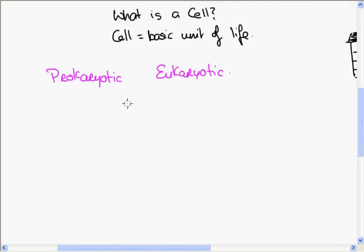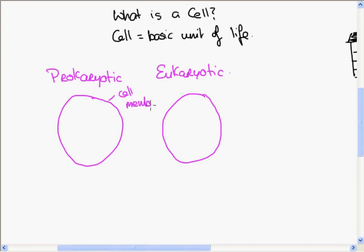Now, as we mentioned, a cell is an enclosed unit, and both prokaryotic and eukaryotic cells are enclosed by a cell membrane. So the prokaryotic cell has a cell membrane, the eukaryotic cell has a cell membrane. The cell membrane surrounds the cell, it holds the contents of the cell in place, and it can decide what gets in and out of the cell.